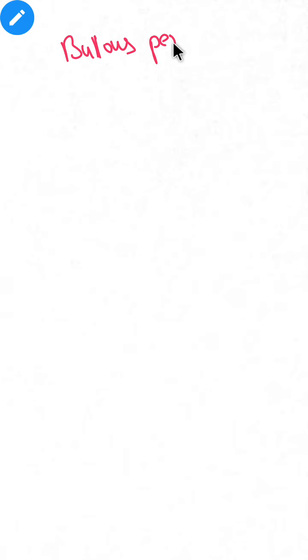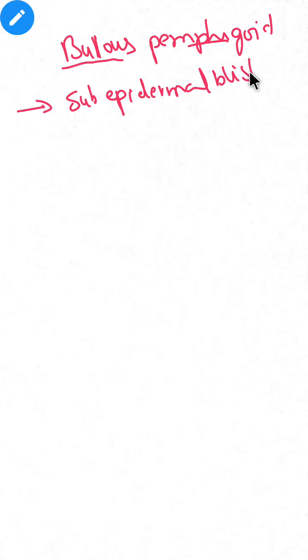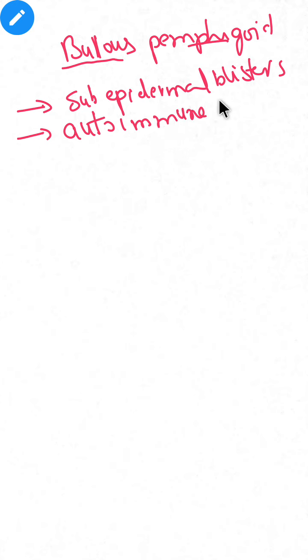Let us discuss about bullous pemphigoid. In bullous pemphigoid, sub-epidermal blisters are formed. Before going to the mechanism, one important thing to remember is that it is an autoimmune disorder.